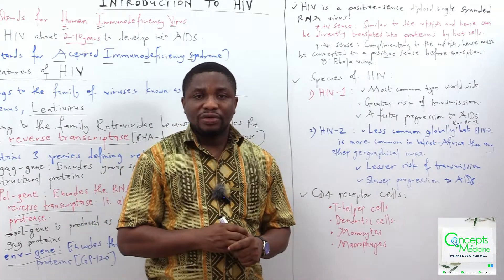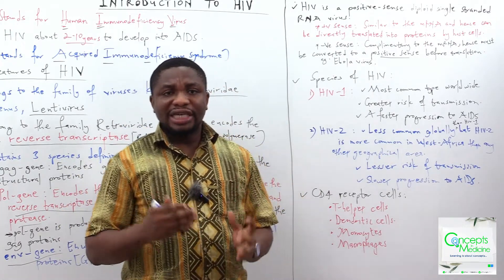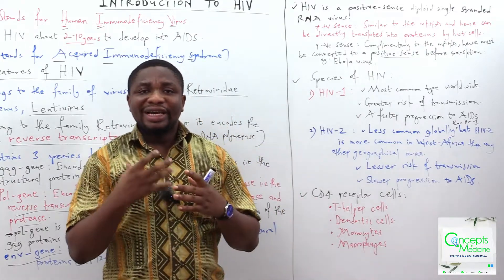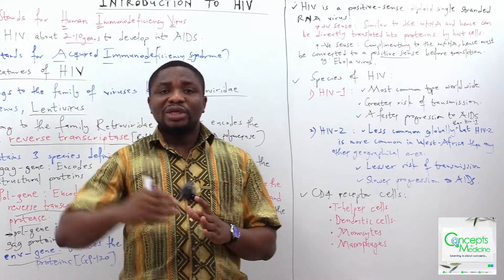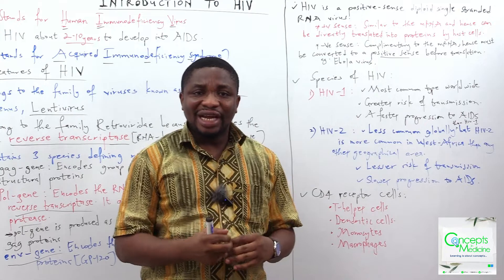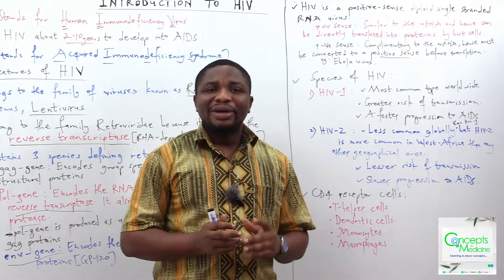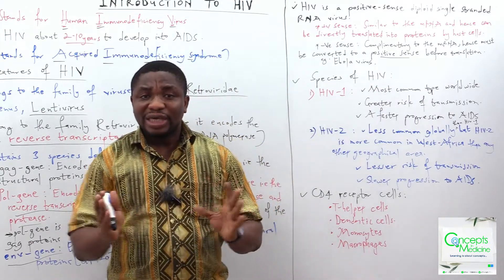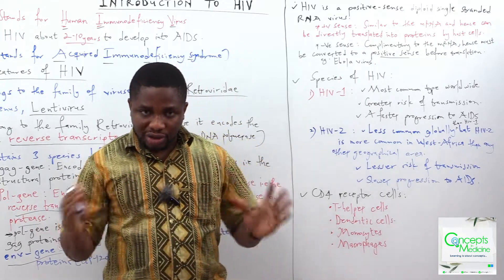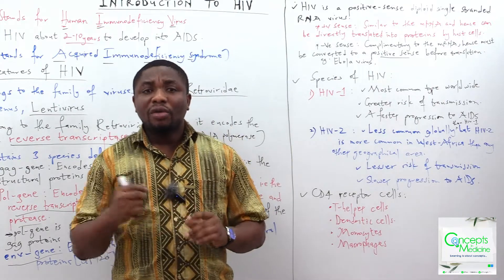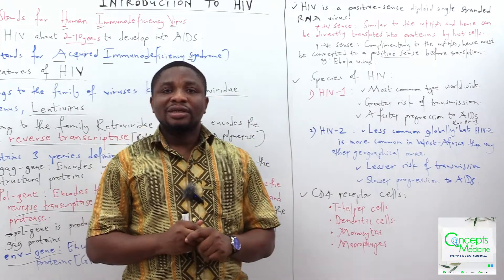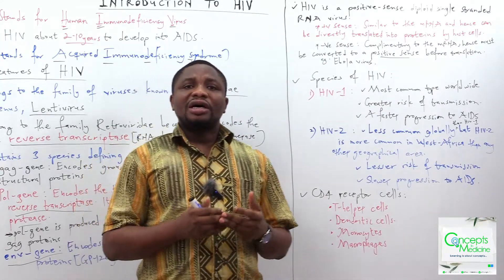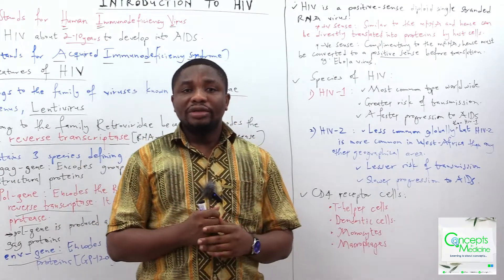For HIV 2, it is less common globally compared to HIV 1. However, when you come to West Africa and look at the incidence of HIV 2, it will be more common in West Africa than any other part of the world geographically — though HIV 1 still remains the more dominant species overall. HIV 2 has a lesser risk of transmission and also slowly progresses to AIDS.